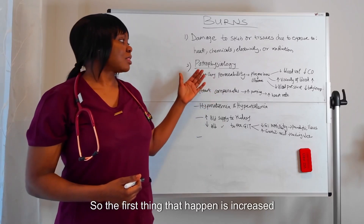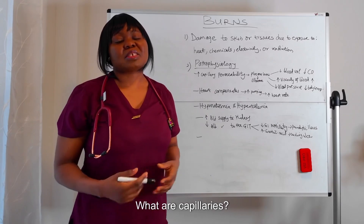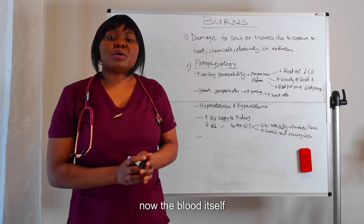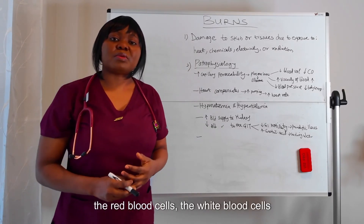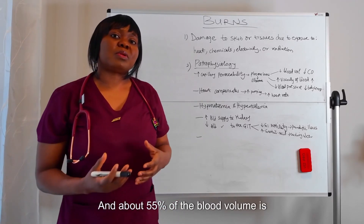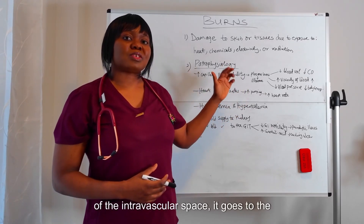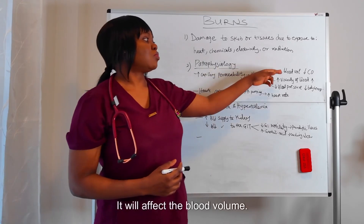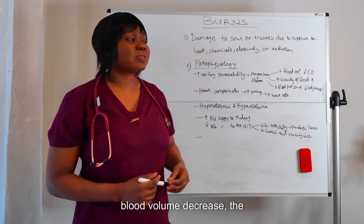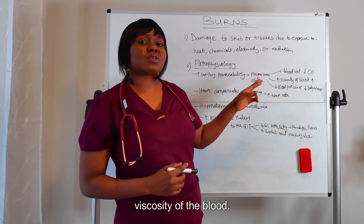The first thing that happens is increased capillary permeability — the capillary becomes more permeable. Capillaries are a network of blood vessels. The blood is made up of plasma, red blood cells, white blood cells, and platelets, and about 55% of the blood volume is plasma. So when plasma leaks out of the intravascular space into the interstitial space, it will affect the blood volume. The blood volume will decrease, and when blood volume decreases, the cardiac output will decrease. This will lead to increased viscosity of the blood — meaning the blood will become thick.